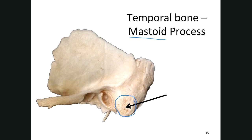There's a bunch of air cells in that area called the mastoid air cells — tiny spaces in the mastoid process. They can get infected. If you press right behind your ear you'll feel the mastoid process; if it's significantly tender, there's a good chance you could have mastoiditis. Bacteria love to hide in that area.